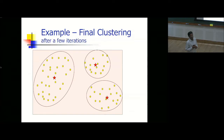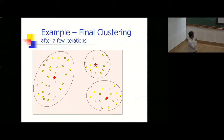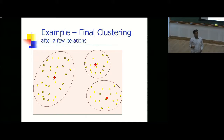Why does K-Means require knowing the number of clusters? If you don't specify K, the algorithm could give N clusters with one point each — each point is its own center, distance is zero. So J equals zero trivially, which is meaningless. Therefore, K-Means requires you to specify K in advance.